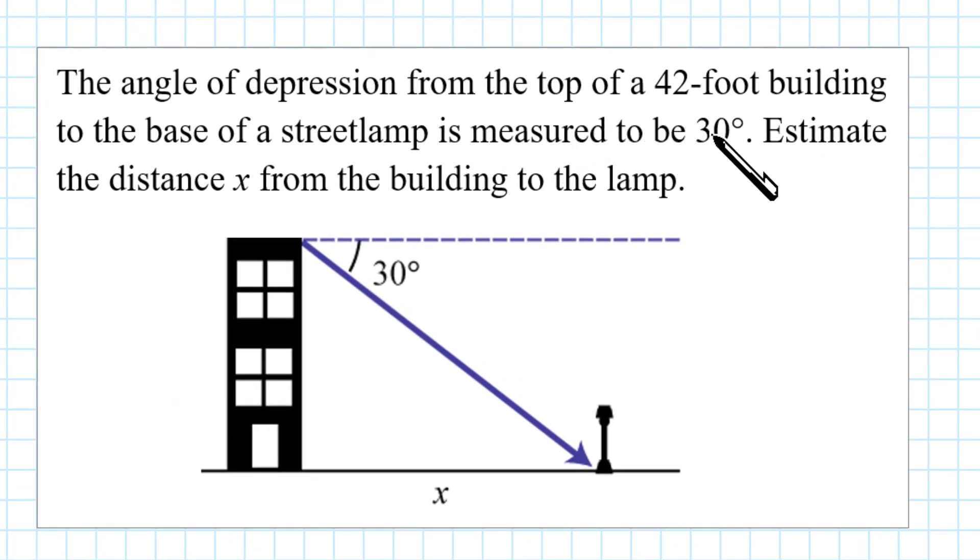The angle of depression from the top of a 42 foot building to the base of a street lamp is measured to be 30 degrees. Estimate the distance x from the building to the street lamp.